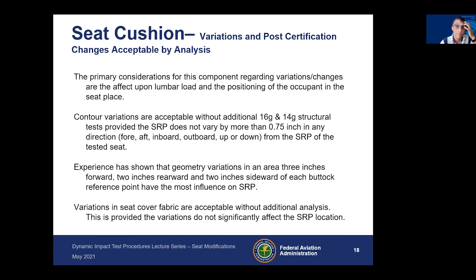The seat cushion is probably one of the primary components that people always want to change. The primary consideration is how changes affect the lumbar load and the positioning of the occupant. Contour variations are acceptable without additional structural tests, provided the SRP does not vary by more than three quarters of an inch in any direction from the SRP of the tested seat.